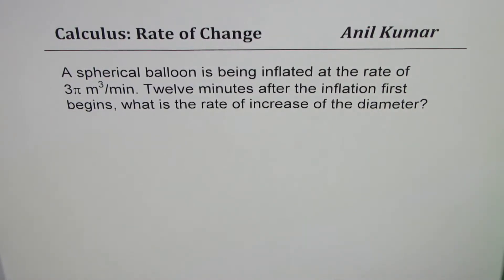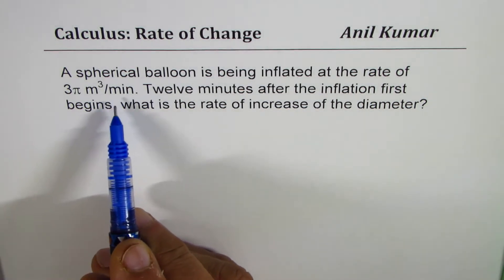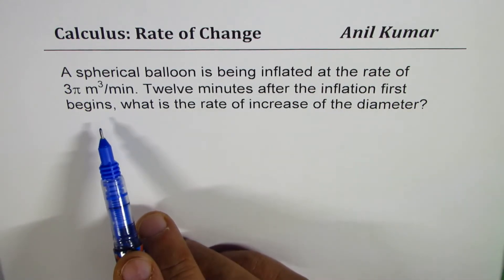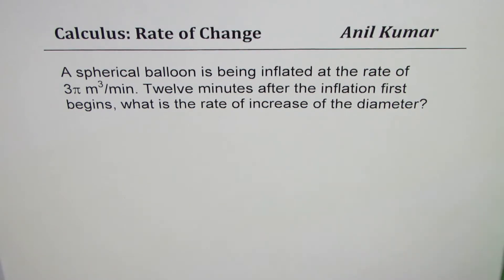I'm Anil Kumar sharing with you an example on rate of change. We are going to follow implicit derivation to solve this particular question. The question here is: a spherical balloon is being inflated at the rate of 3π m³/min. Twelve minutes after the inflation first begins, what is the rate of increase of the diameter?